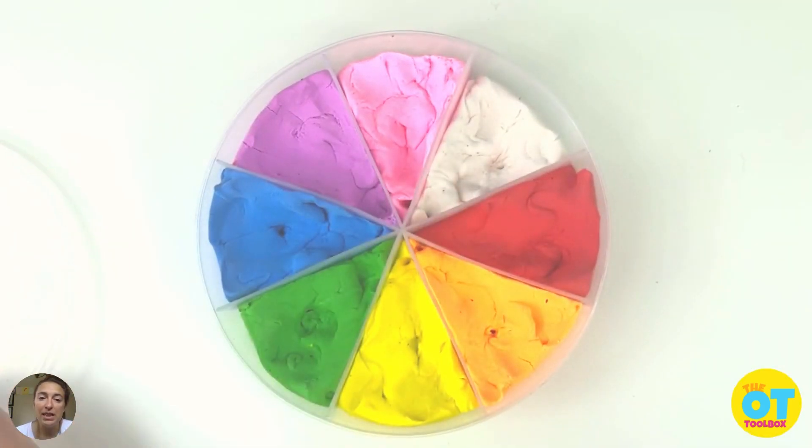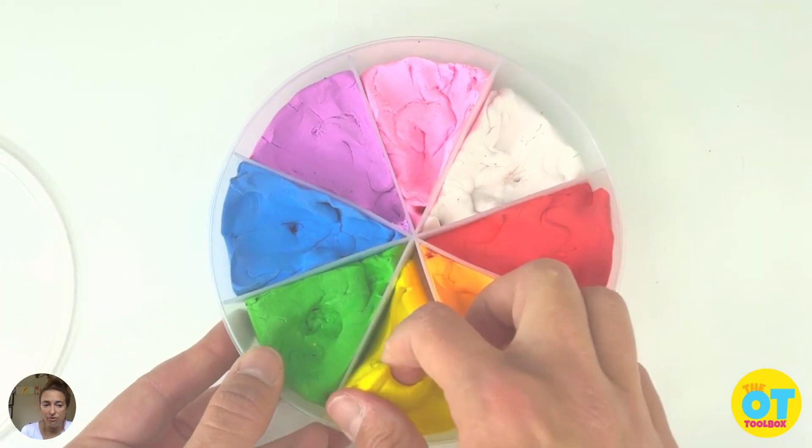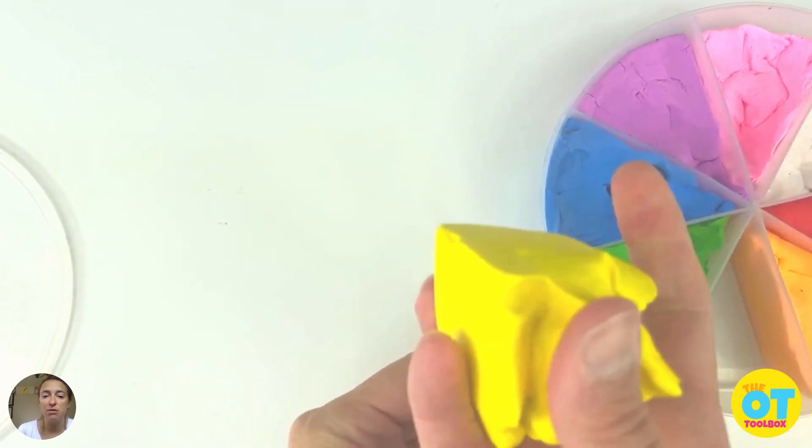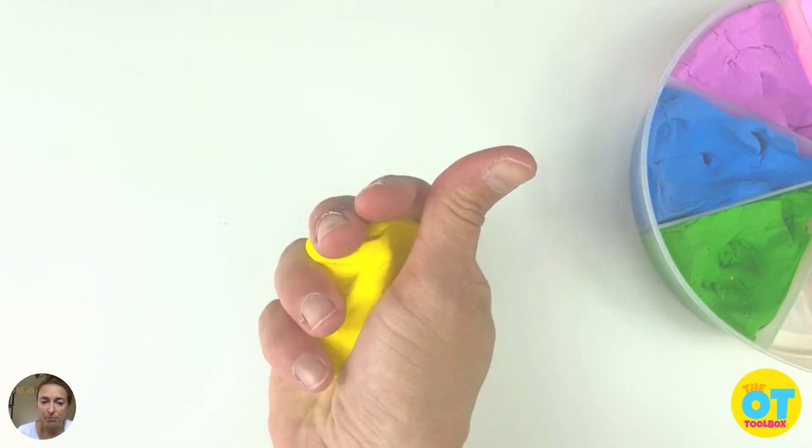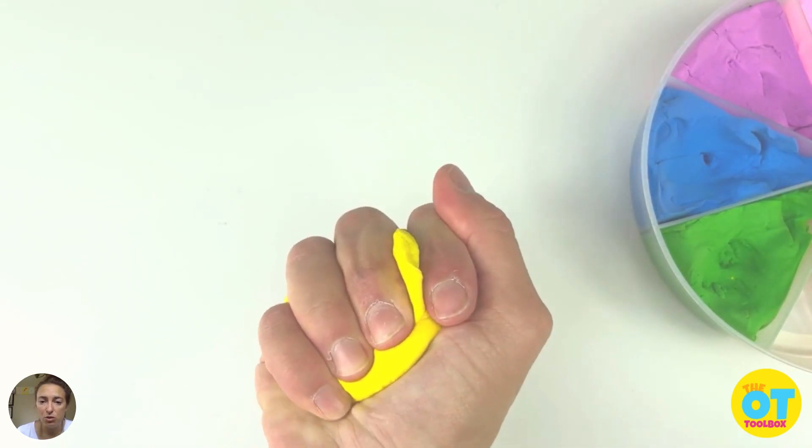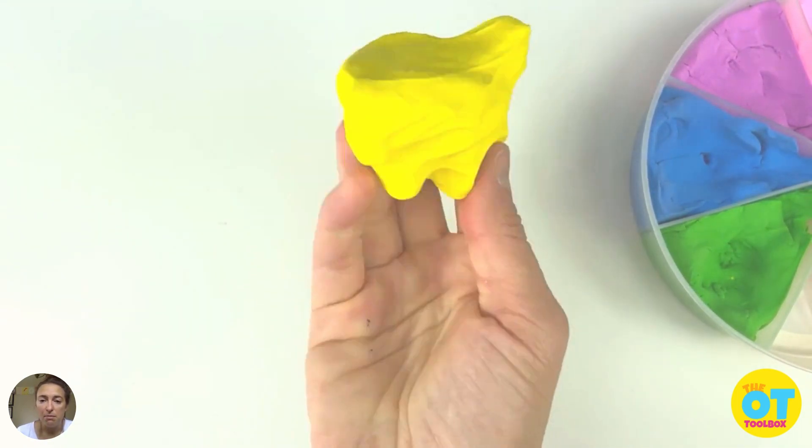First is opening that container because that's such a great functional fine motor task that really works on hand strength. Okay, we picked out one color, pulling it out of the tube of Play-Doh.